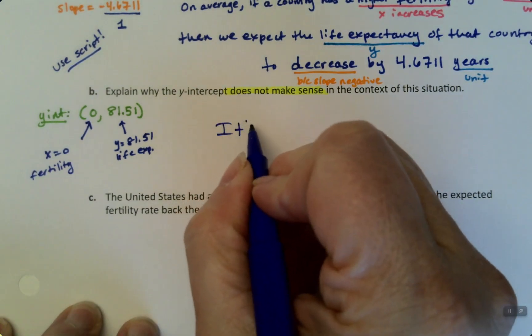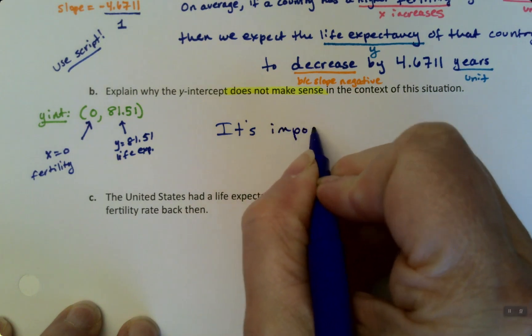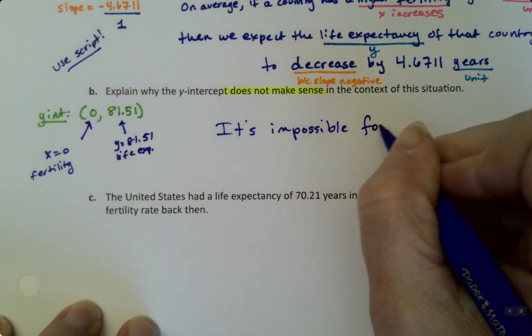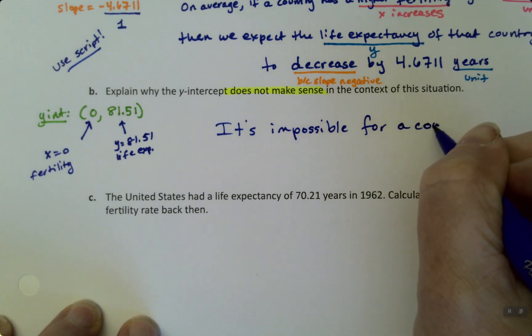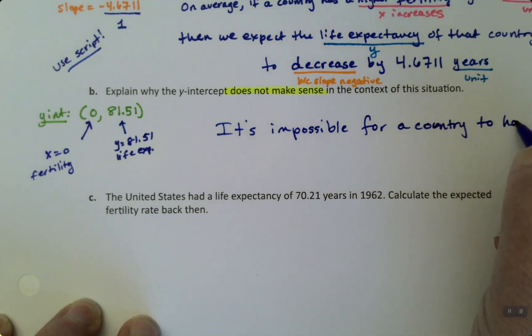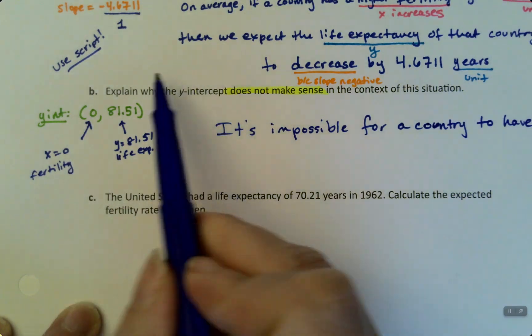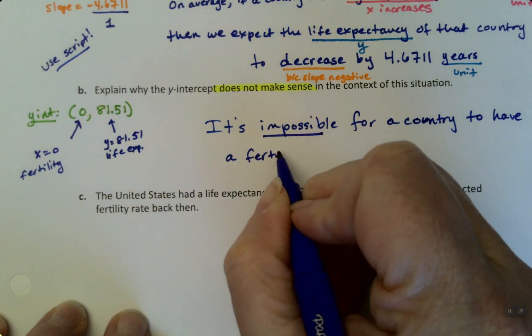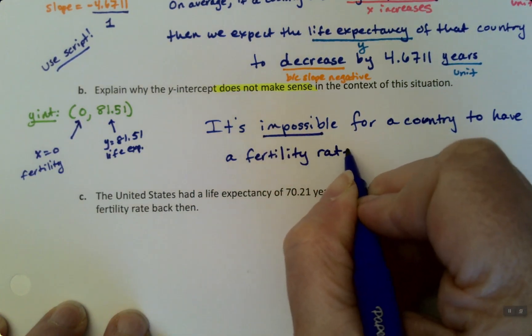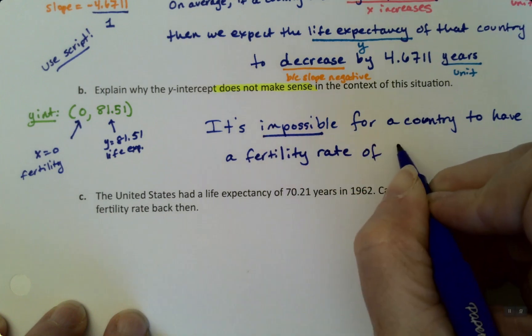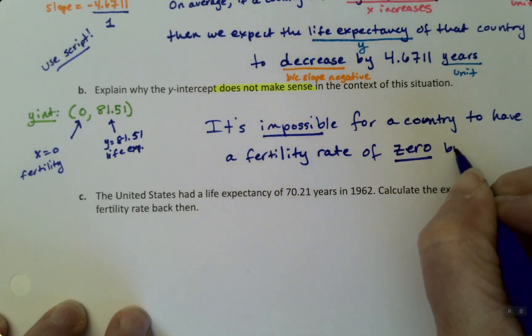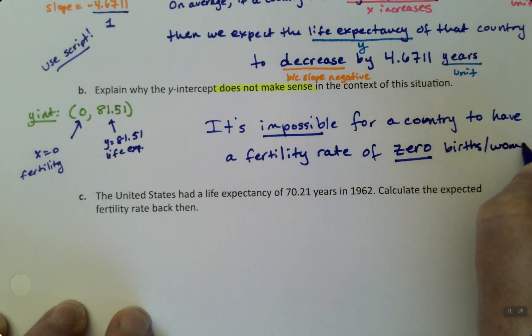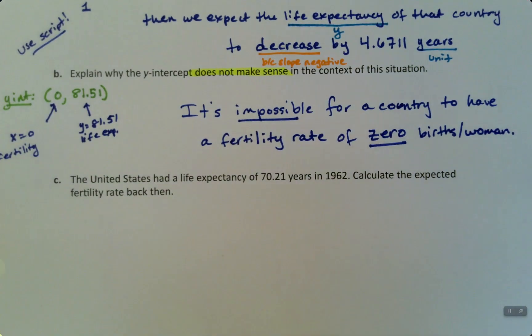Don't just fall into the trap of writing the script. Sometimes you'll write the script, and you can see I'm kind of hinting at what it would be. If the fertility was 0, the life expectancy would be 81, right? And put units on that. But that doesn't make sense in this context. So you'll get points just for explaining why it doesn't make sense. It's impossible for a country to have, and it's the fertility, right? It's the x-axis variable that's 0. To have a fertility rate of 0 births per woman. That makes no sense. No country has that.